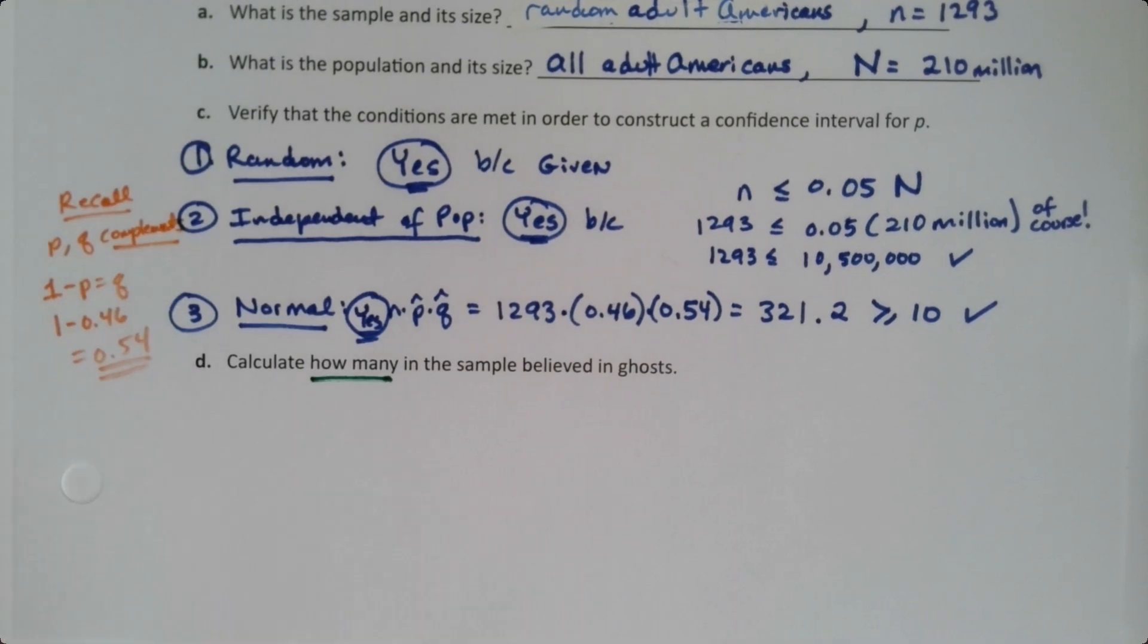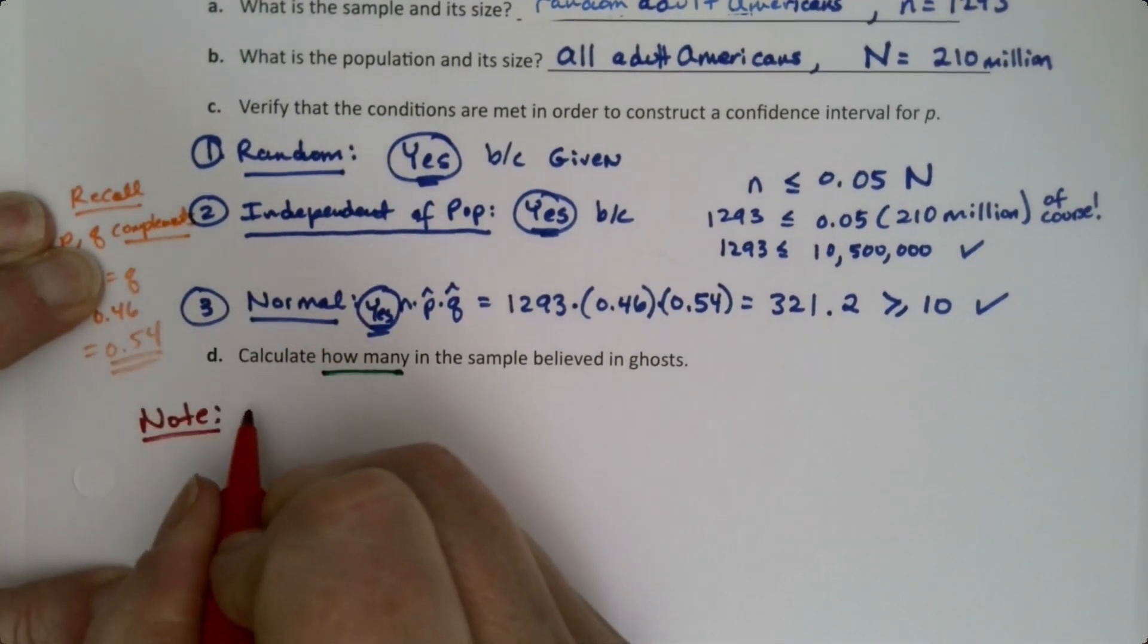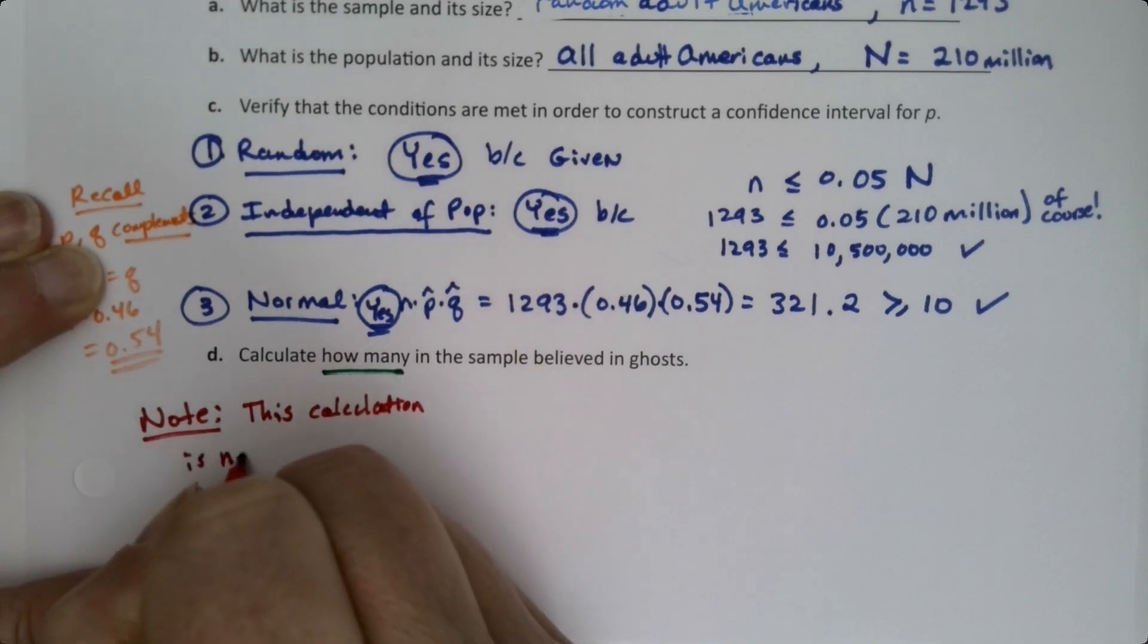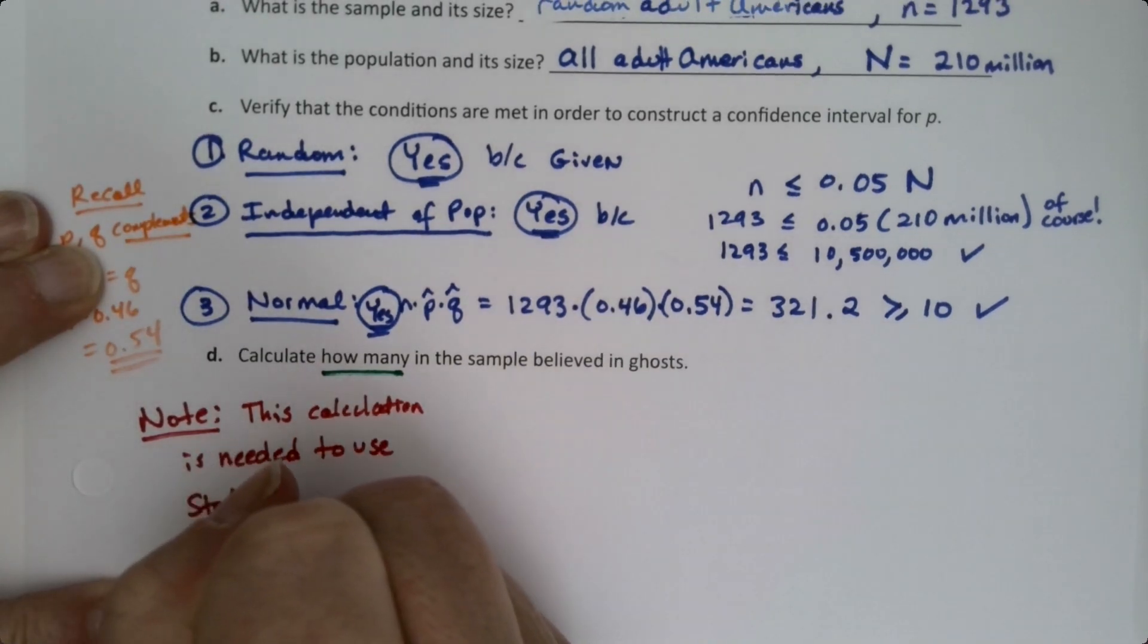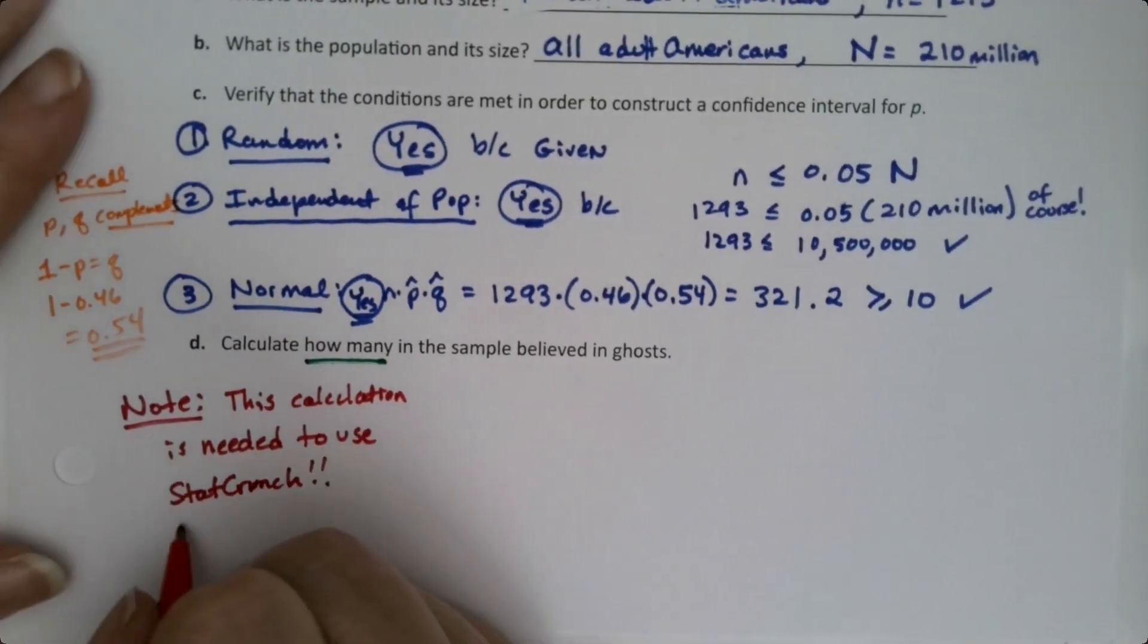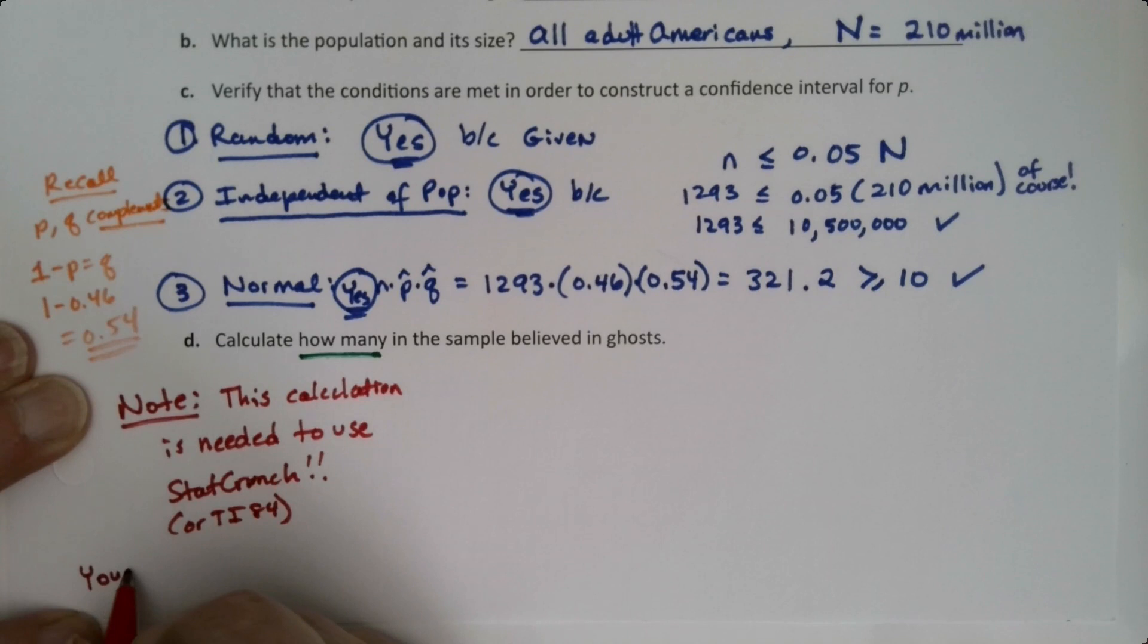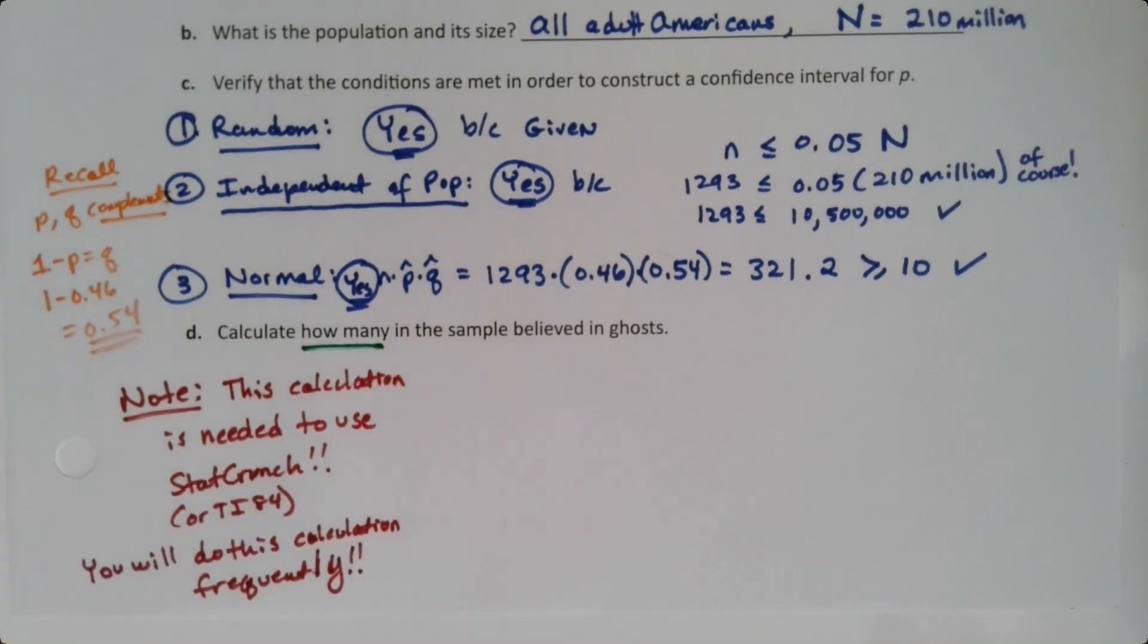This is a very important calculation, so we'll make a note: this calculation will be needed for technology—needed to use StatCrunch and/or the calculator. That's why we're prepping it now. You're going to do this calculation a lot, frequently—a lot, a lot, a lot.